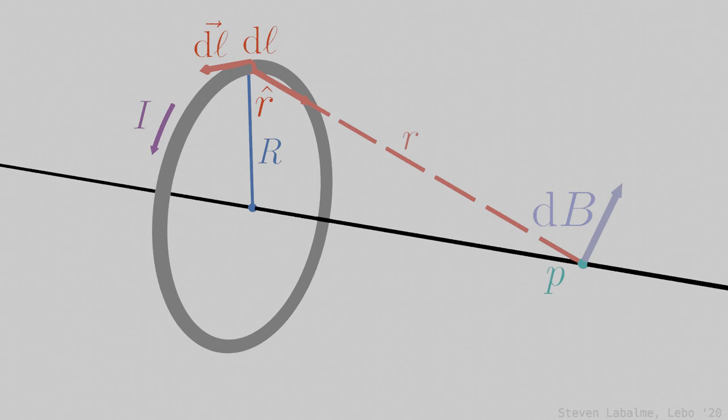Now that direction has been settled, we look to find its magnitude. The magnitude of dB can be found using the law of Biot and Savart, but to find Bx, we must relate dB to every infinitesimal contribution to Bx, dBx.